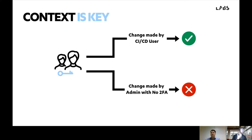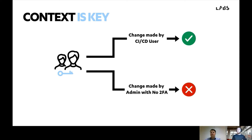Another major finding is around context. When you're dealing with an environment that is purpose-built, the actions that take place are very much based on the purpose of everything in there. Consider a given IAM user in AWS — if that's upgraded its privileges, how that user obtained those privileges could be of huge significance. If that change is done by a CI/CD user, it could be completely benign. But the very same change made by an admin user with no 2FA and a GeoIP-enriched anomalous location — this is completely unexpected and should be raised as an investigation. Context is key.